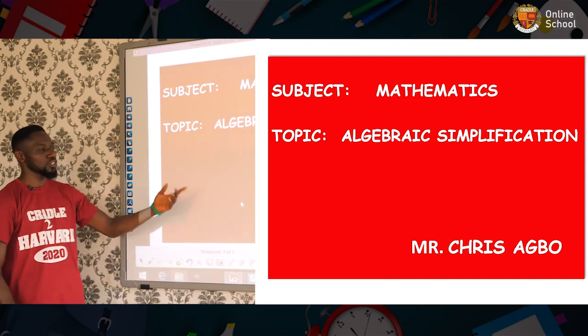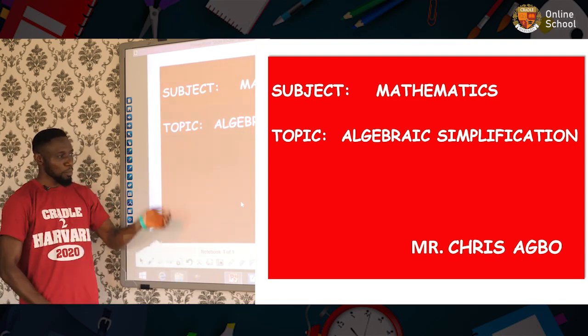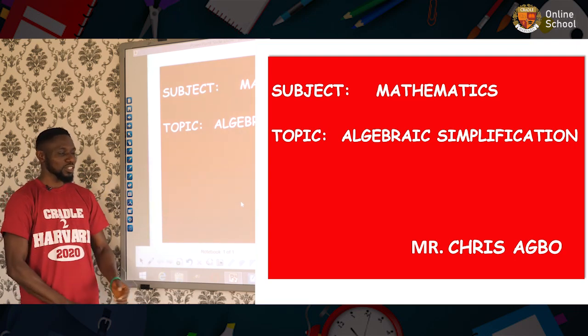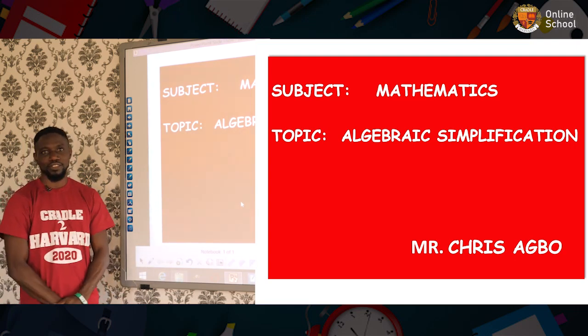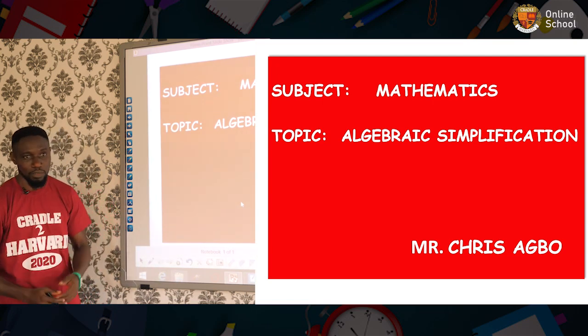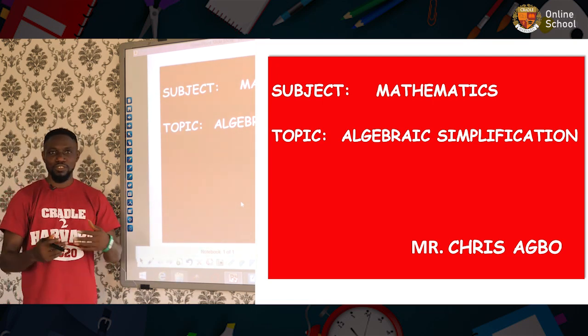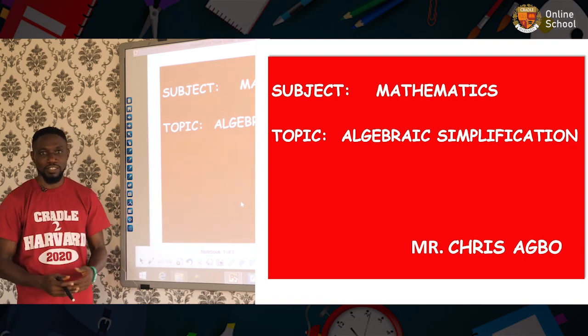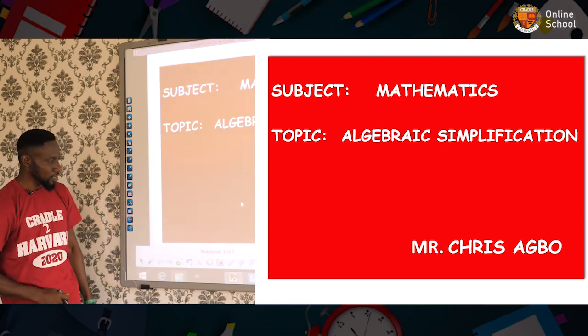Today we'll be looking at algebraic simplification. But before we go further, I'd like us to understand what is an algebraic expression. When you hear the word algebraic expression, it means a combination of numerics and alphabets. That is to say, the combination of letters and numbers in an alphabet is what is called an algebraic expression.